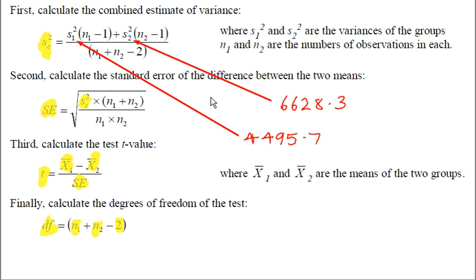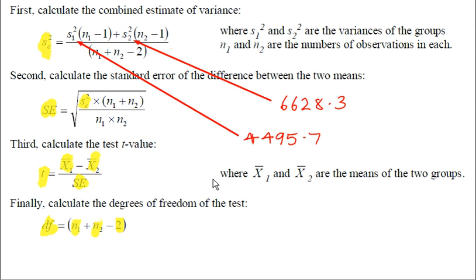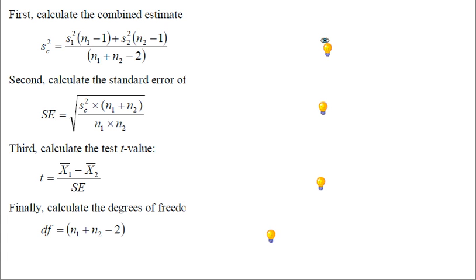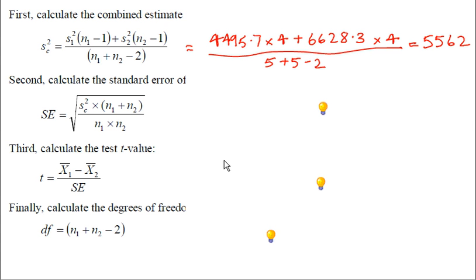Okay, to start doing these calculations we plug the two variances we've calculated in into these places in the formula. So s1 squared is the variance for sample 1 and s2 squared is the variance for sample 2. So we can then do this calculation to work out the combined variance. Variance for sample 1 times 4 plus variance for sample 2 times 4 divided by n1 plus n2 take away 2. So that's 10 take away 2 or divided by 8 gives us a combined variance of 5562.